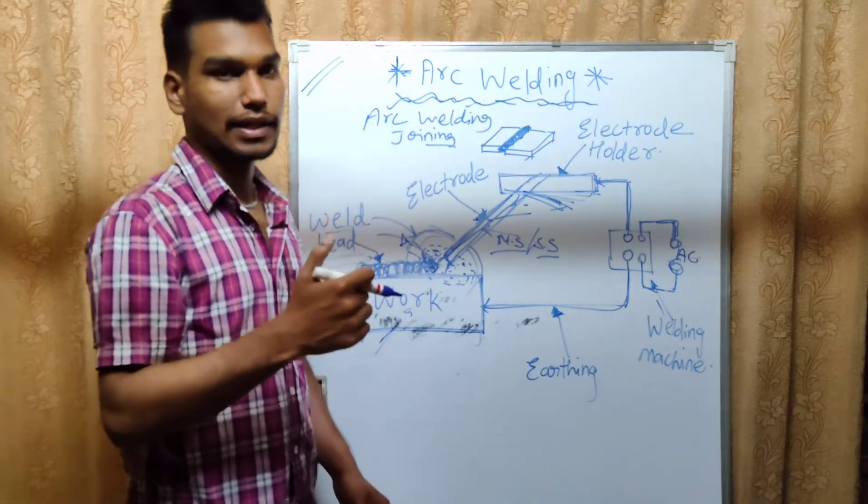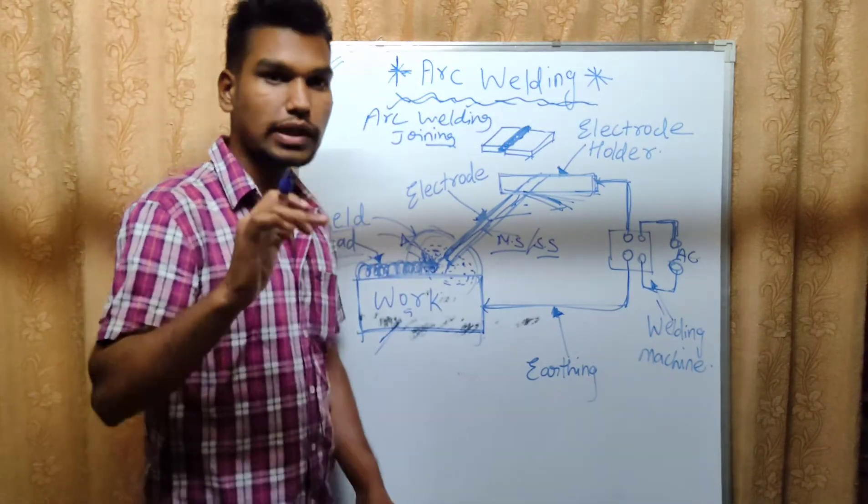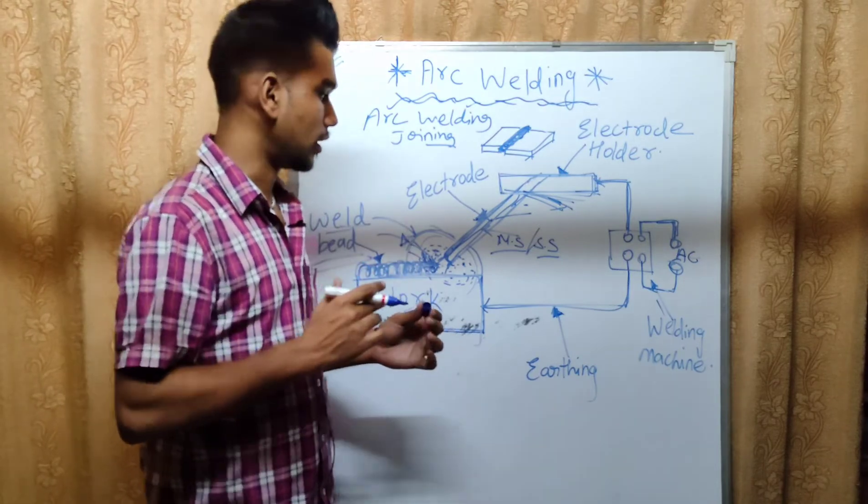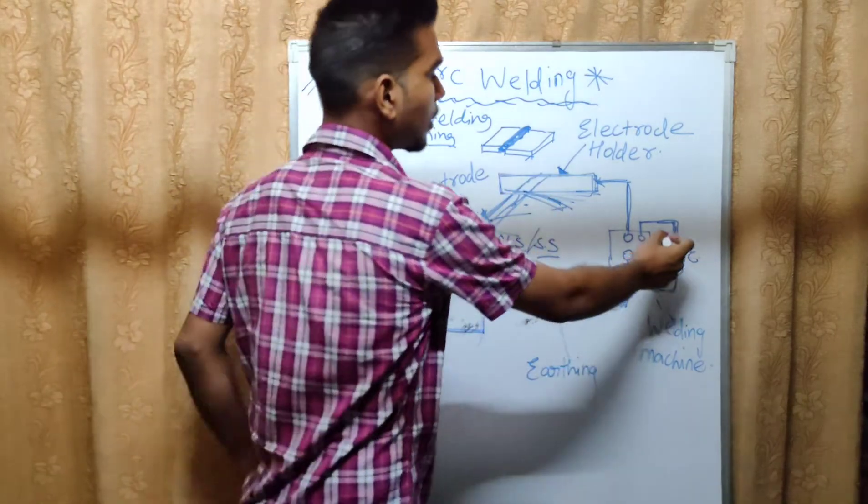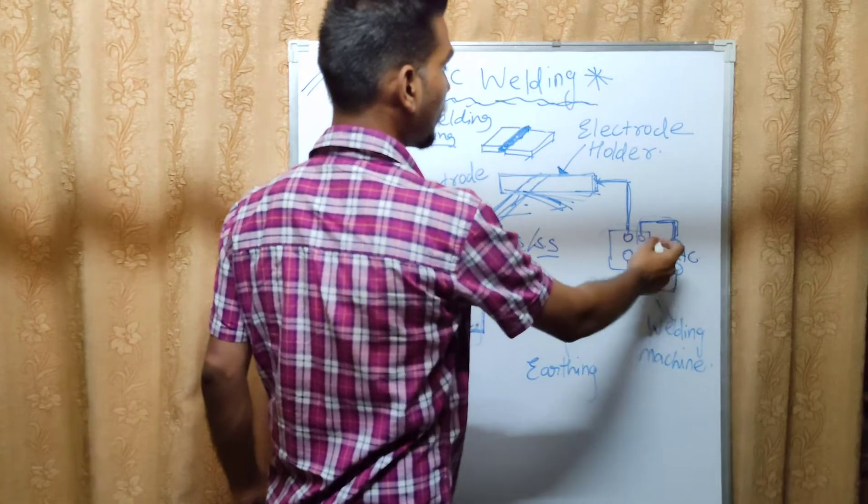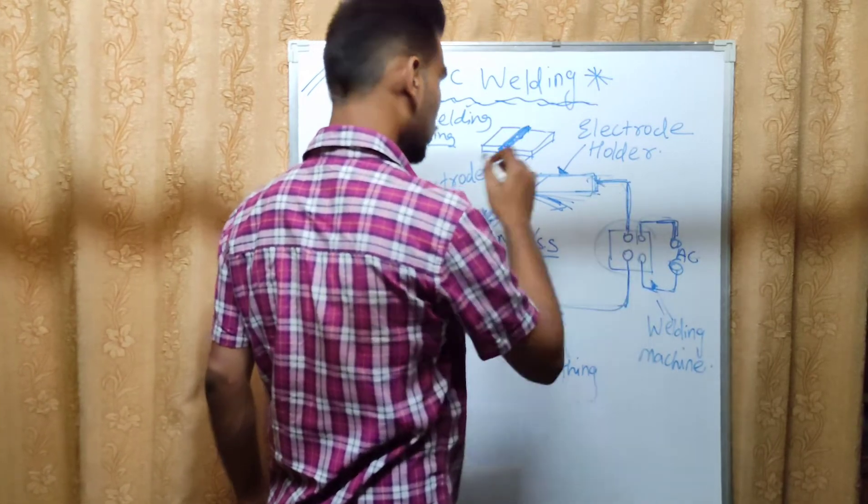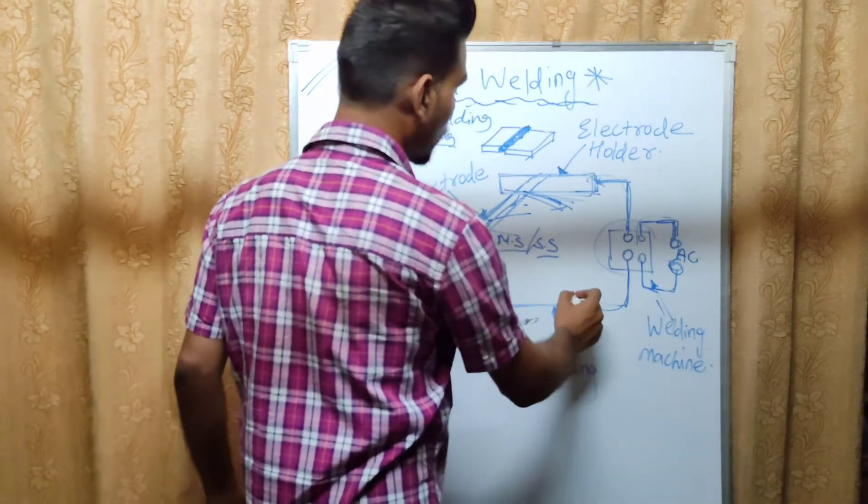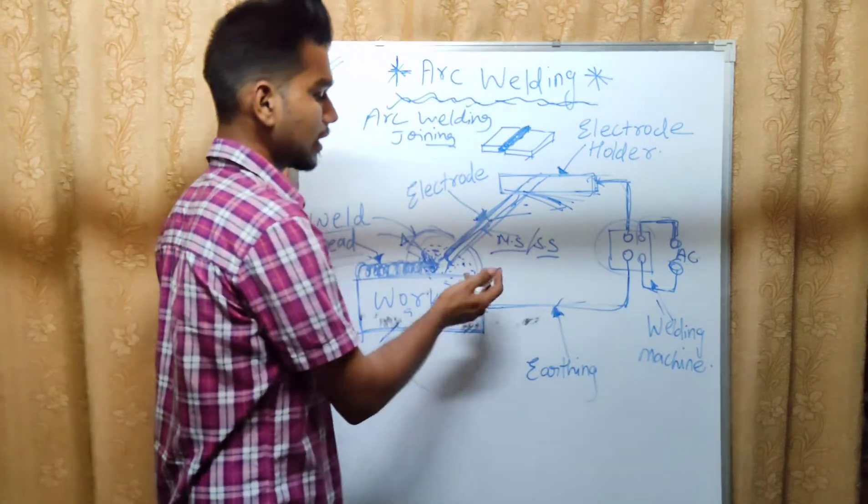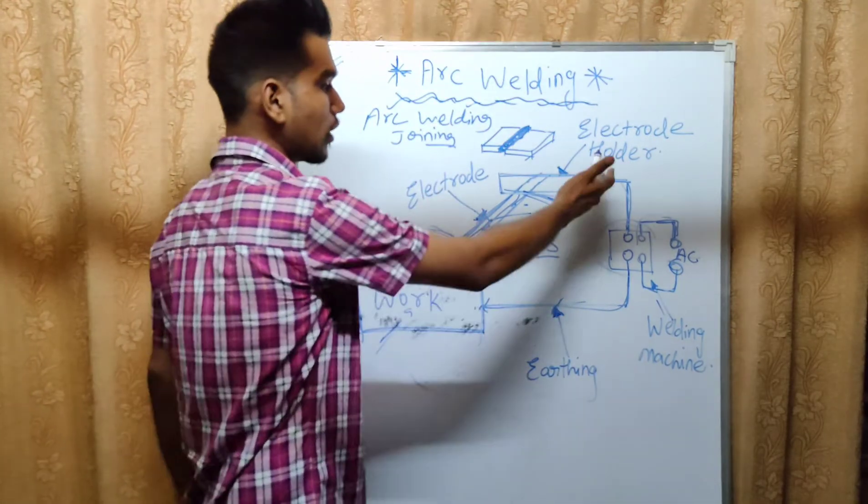Because it will be direct current, welding will be in one line. AC to DC, it will not be fluctuating. The alternative current becomes direct current. So AC comes and the machine converts to DC. This is the whole point of earthing.